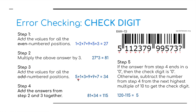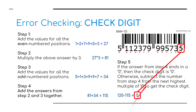Then we repeat this but with the odd number positions: 5, 1, 3, 9, 9, 7, to get 34. We add them both together to get 115. Step 5: if the answer from step 4 ends in a 0, then we put that 0 into our check digit position. Otherwise, we subtract the number from step 4 from the next highest multiple of 10. So if we've got 115, the next highest multiple of 10 will be 120. We take that away to get the number 5, and that goes in the final position as the check digit.